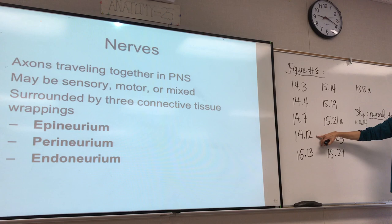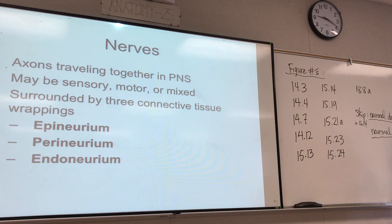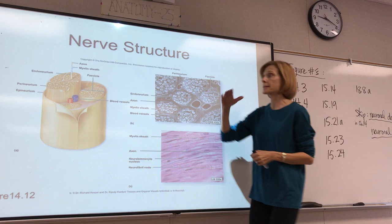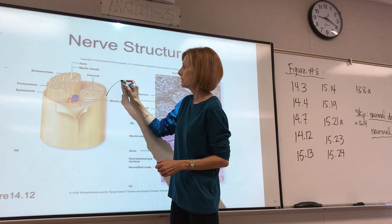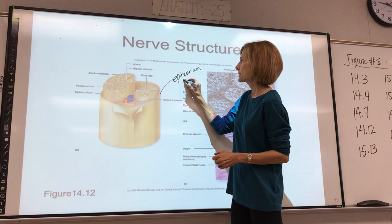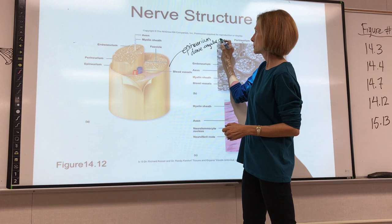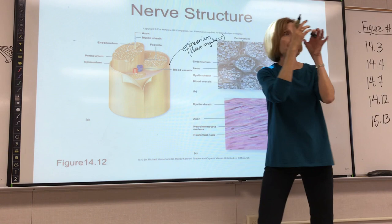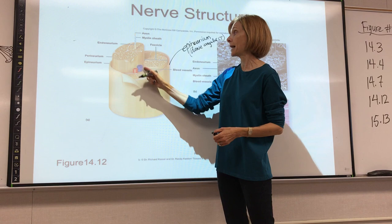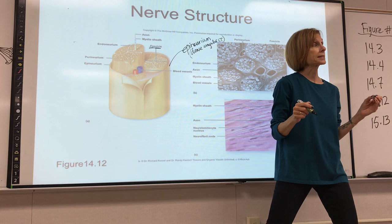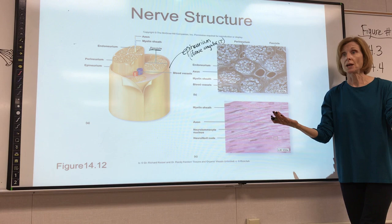This is figure 14.12, which will be on the practical. This is a cross-section through a nerve. Notice that the outermost layer of connective tissue is the epineurium — epi meaning outside of or on top of. This is dense irregular, just like epimysium. You can see how the axons are bundled into little bundles called fascicles, just like in the muscle. Fascicles are surrounded by another layer of connective tissue called the perineurium.